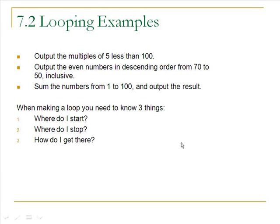Here are some examples to work on. Output the multiples of 5 less than 100. Output even numbers in descending order from 70 to 50, inclusive. Sum the numbers from 1 to 100 and output the result. Making while loops that solve simple problems is the place to start when learning about repetition. When you make a loop, you need to know three things: where do you start, where do you stop, and how do you get there?